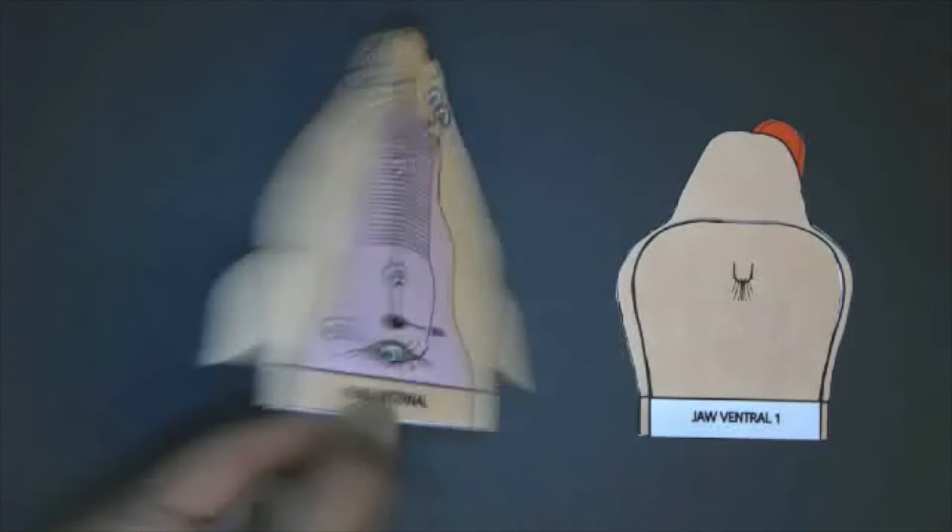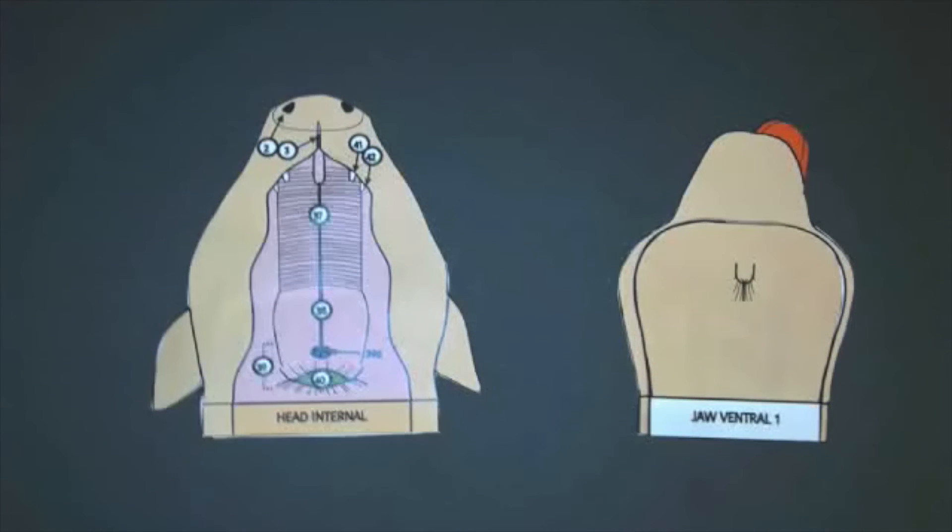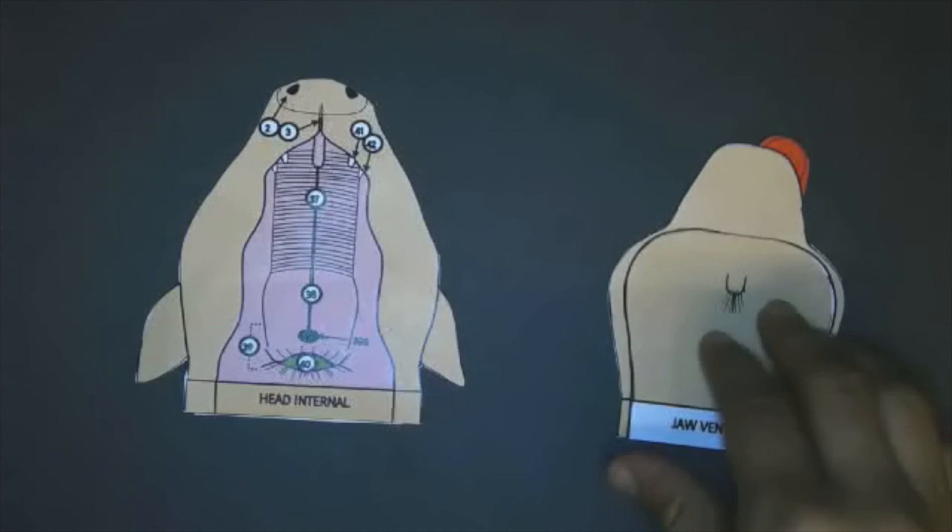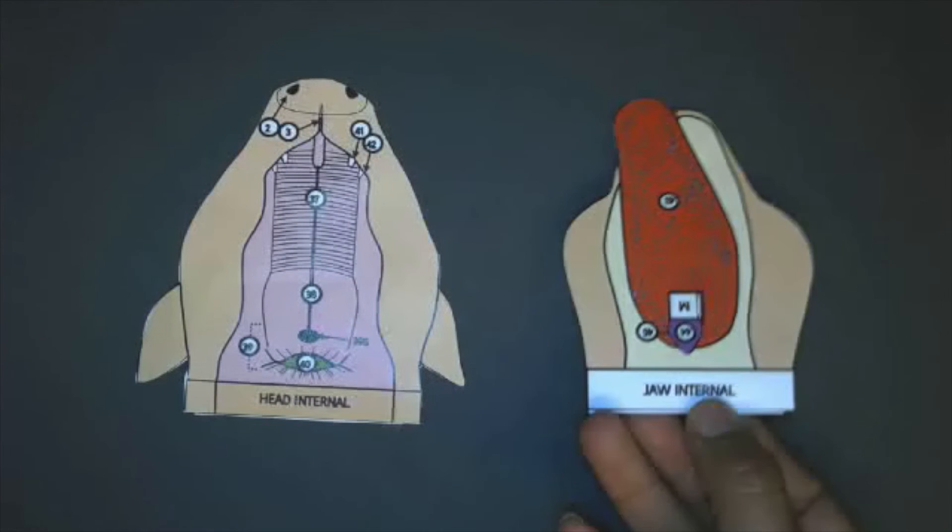On the right hand side we have the jaw ventral which is the underside of the chin, and if you were to flip that over you have the bird's eye view of the tongue.